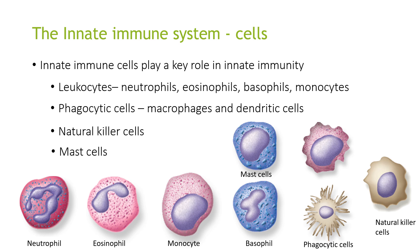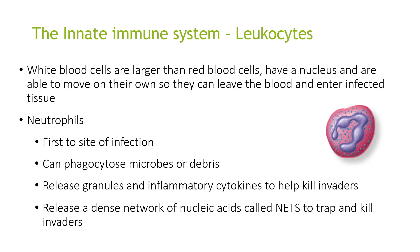Innate immune cells play a key role in innate immunity. These include leukocytes such as neutrophils, eosinophils, basophils and monocytes; phagocytic cells such as macrophages and dendritic cells; as well as natural killer cells and mast cells.